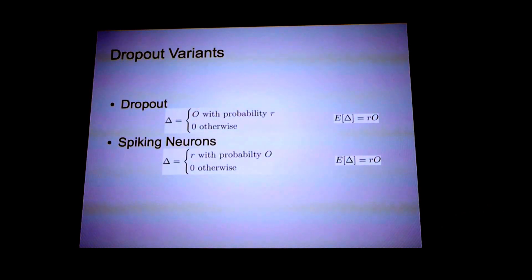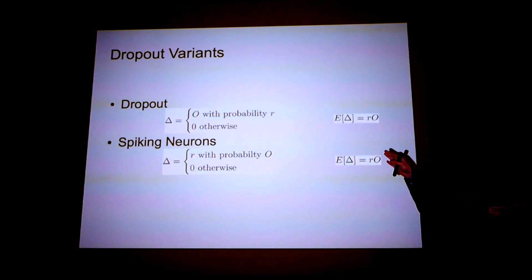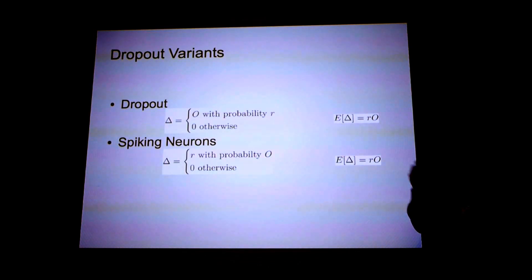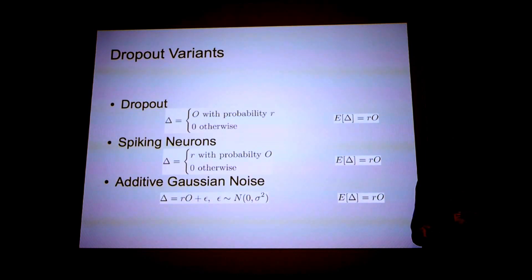So I have one more dropout variant to discuss. And it's actually very simple. It came from this observation that in both dropout and spiking neuron algorithm, you just have the expectation of the output be the same. And we're just adding noise to each neuron. So the simplest way of adding noise is just to add Gaussian noise to each neuron. So we do this, we add this noise term with mean zero and standard deviation sigma. And intuitively we can tune this sigma to increase or decrease the amount of noise we add to each neuron, which corresponds to increasing the regularization or decreasing the regularization.